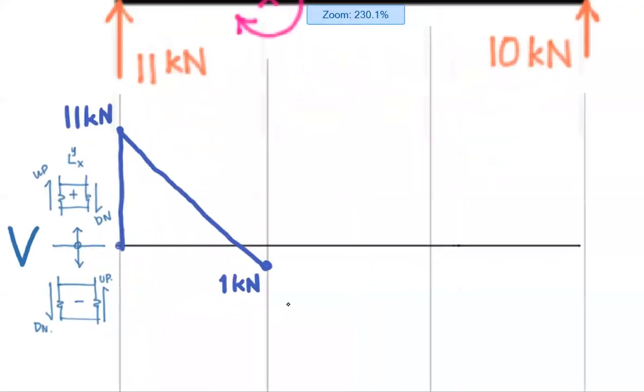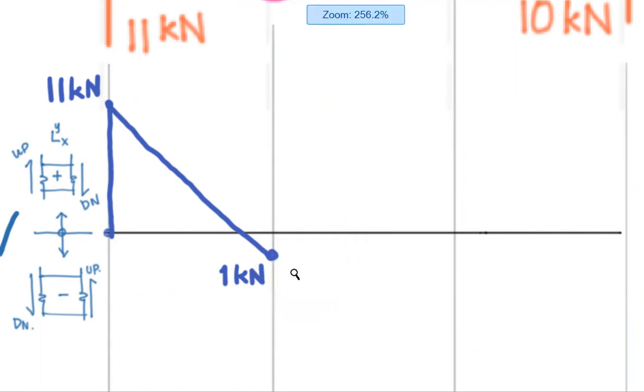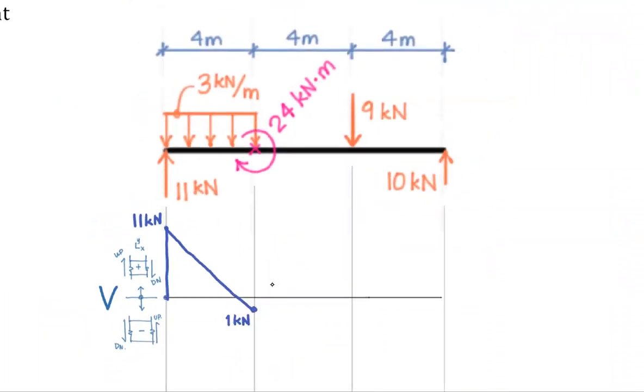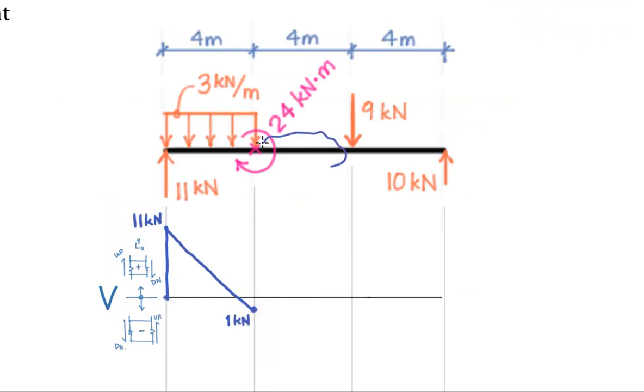It is my preference, when I have values that are below V equals zero, I label the magnitude. I don't tend to put a negative sign here in front. I know some people do like to do that. It's not wrong, it's just a little different. I let the picture do the talking. For the next four meters, we have zero applied force here. What that means is that our internal shear isn't changing. So we're going to do a constant function, staying at one kilonewton, until we get to x equals eight meters.